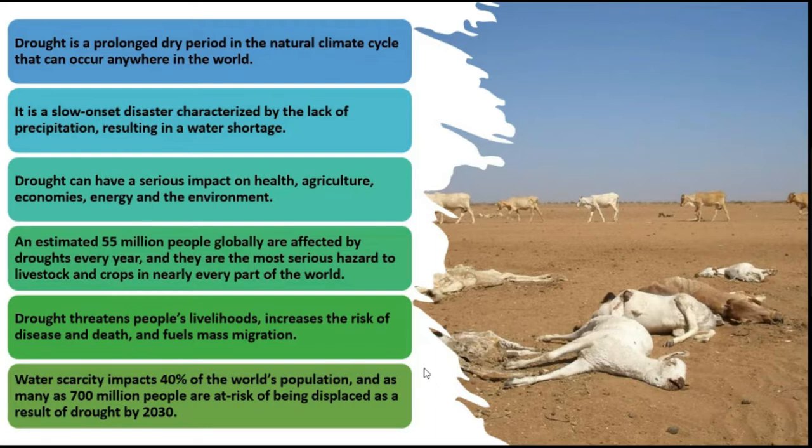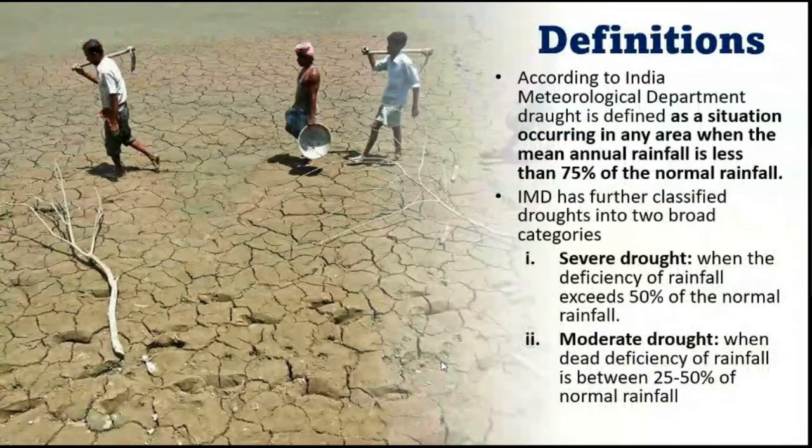Drought threatens people's livelihoods, increases risk of disease and death, and fuels mass migration, which can lead to demographic change. Water scarcity impacts 40% of the world's population, and as many as 700 million people are at risk of being displaced as a result of drought by 2030. This means drought is going to be a more serious problem in the near future.